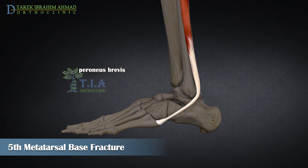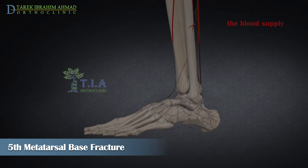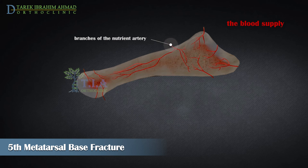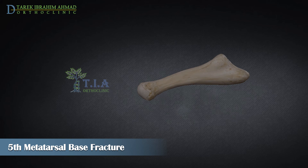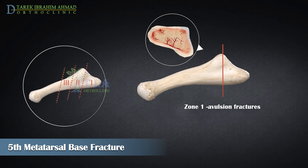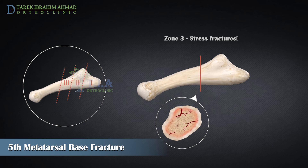The lateral band of the plantar fascia attaches to the plantar aspect of the tuberosity. The peroneus brevis tendon attaches to the lateral aspect of the tuberosity. Variations in the blood supply to the fifth metatarsal help explain the pathophysiology of fracture healing. The tuberosity receives blood from multiple metaphyseal vessels and branches of the nutrient artery, and is therefore more likely to heal without difficulties.